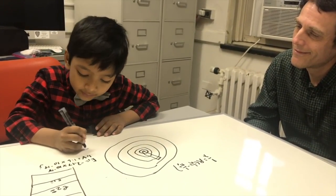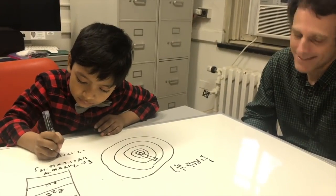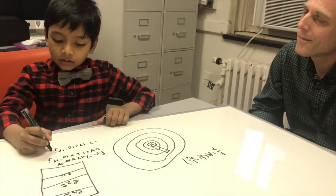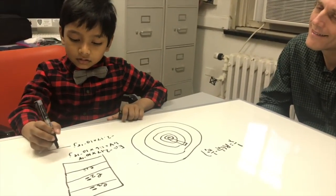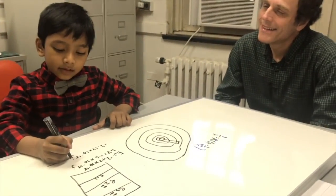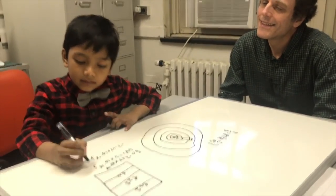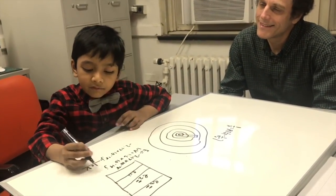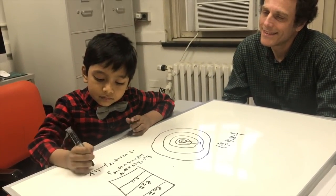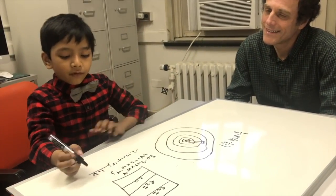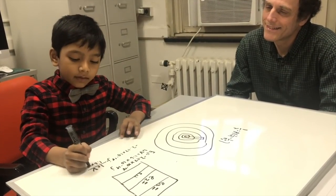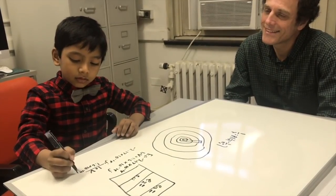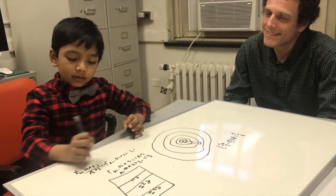So, e1, negative 2.17 times 10 raised to the negative 18 joules. This is technically on the top. So, we want this to be multiplied by a fraction. One eV, since we want to convert this to electron volts, must be on the top. Over 1.6 times 10 raised to the negative 19 joules is on the bottom.